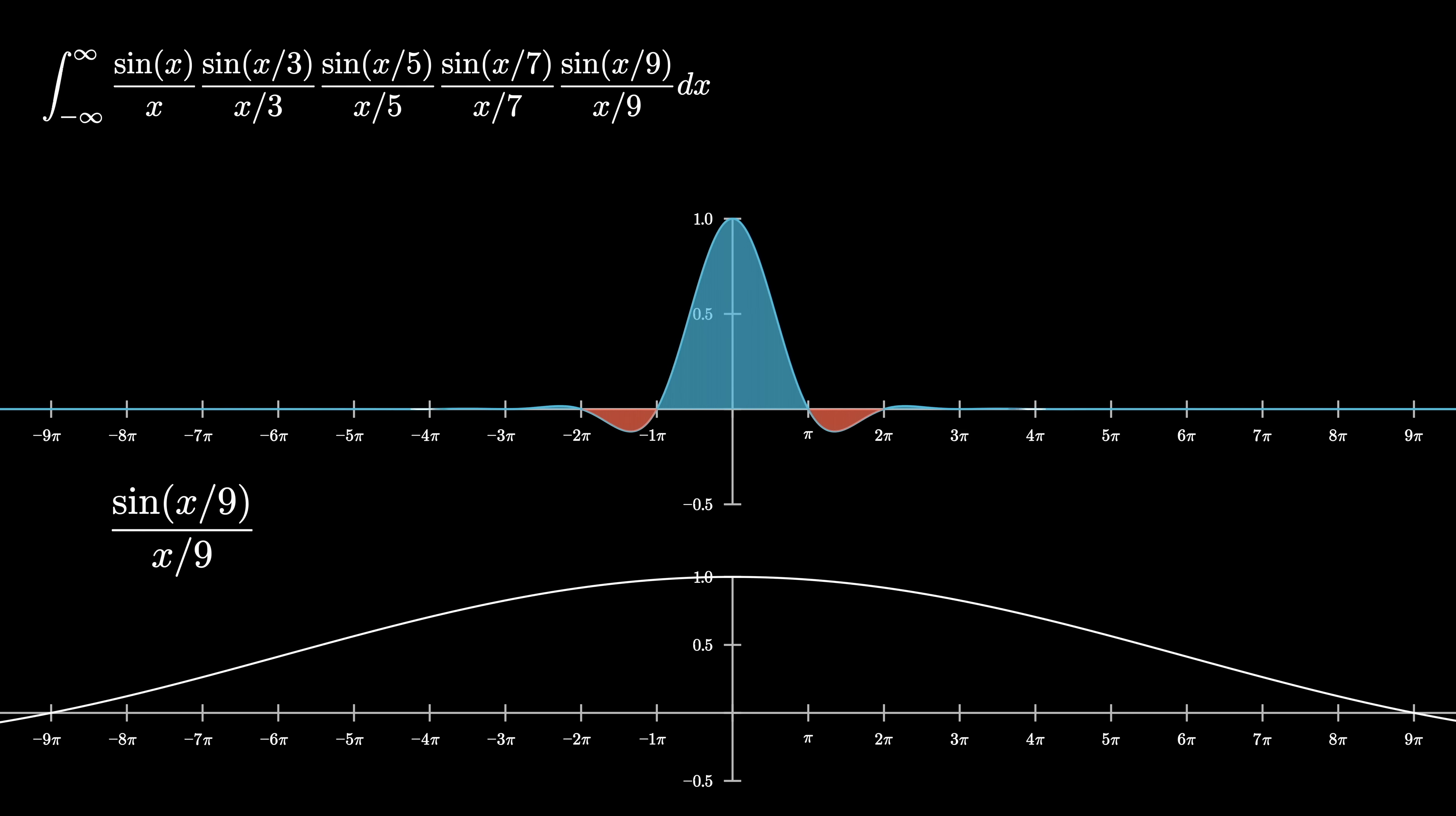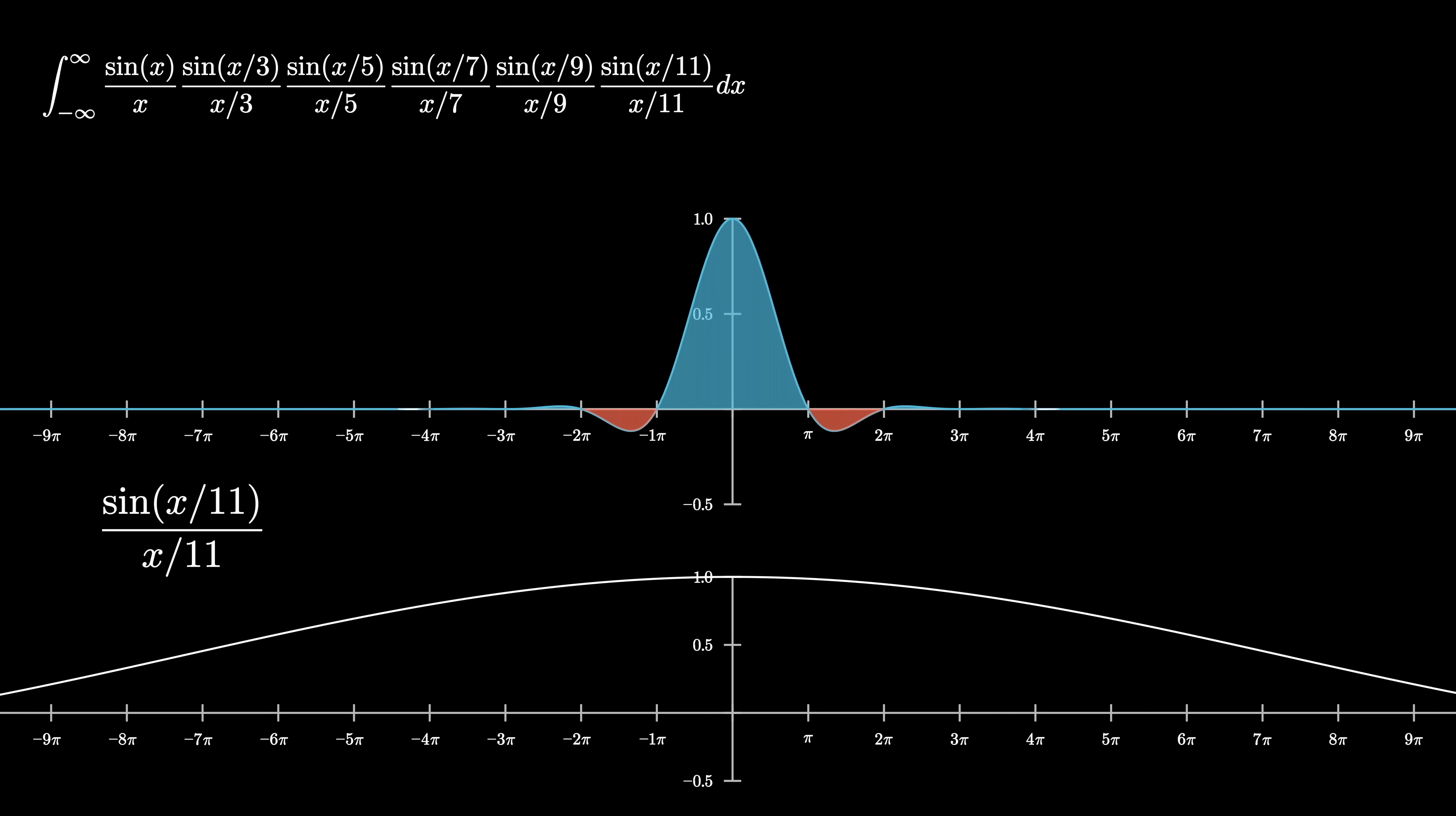One thing you might notice is how, except at the input x equals zero, every single part of this function is progressively getting multiplied by something that's smaller than one. So you would expect, as the sequence progresses, for things to get squished down more and more, and if anything, you would expect the area to be getting smaller.